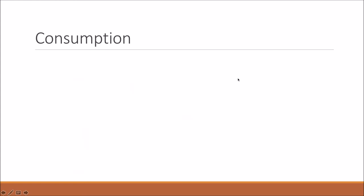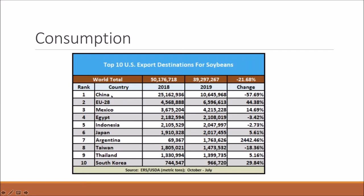Who consumes the most soybeans? Without a doubt, China consumes the most. In 2018 China consumed around 25 million tons, but in 2019 it consumed less — dropping to around 10 million — because of the trade war. But interestingly, Argentina's exports suddenly increased by over 2,000%. What happened is that when China had a trade war with the US, China didn't buy from the US but bought from Argentina instead. And the US exported soybeans to Argentina, which then sold them to China. Even when you ban something, people will find a way.